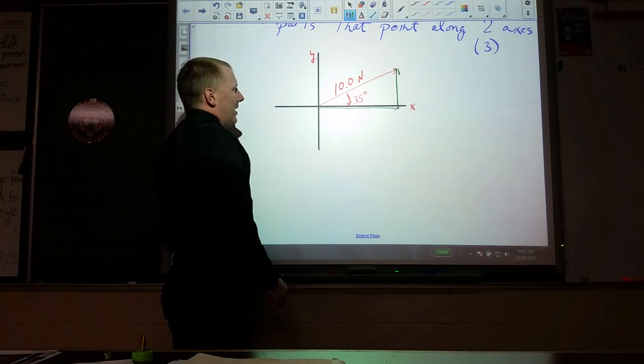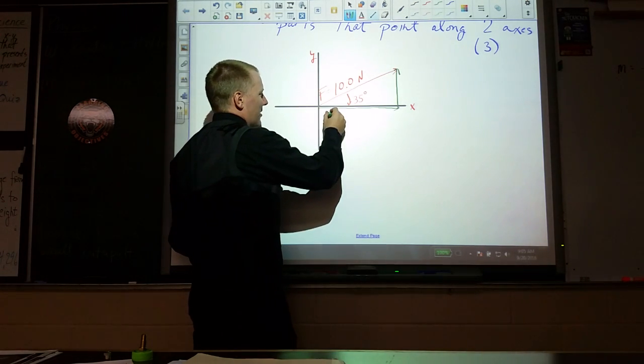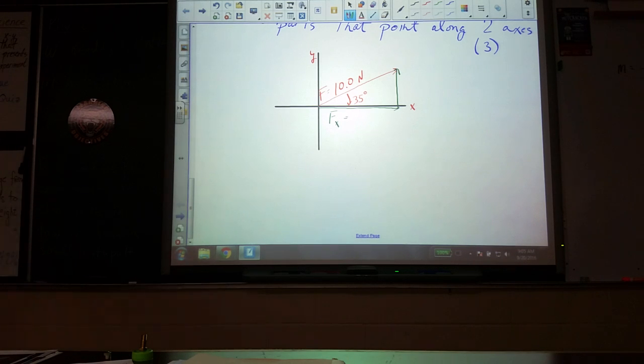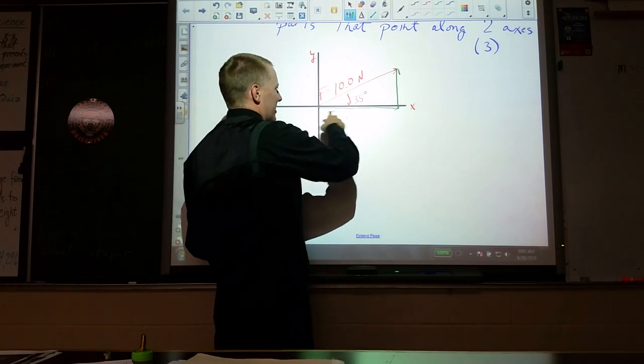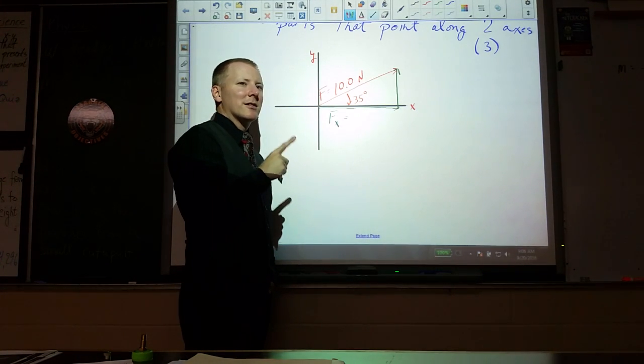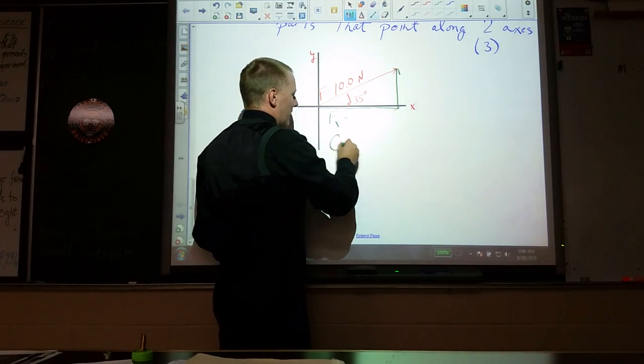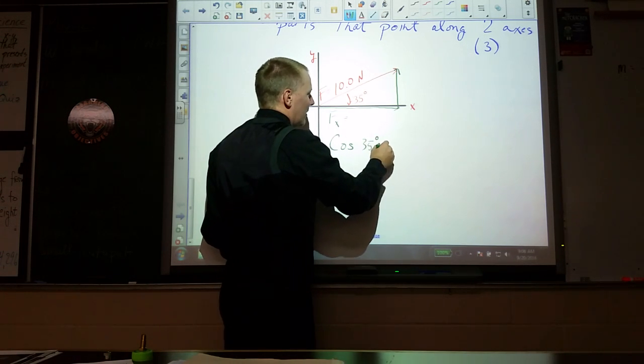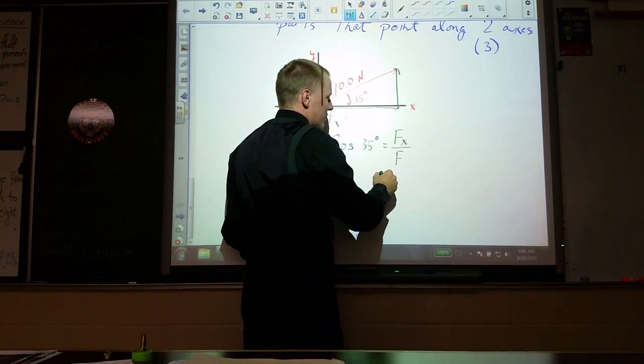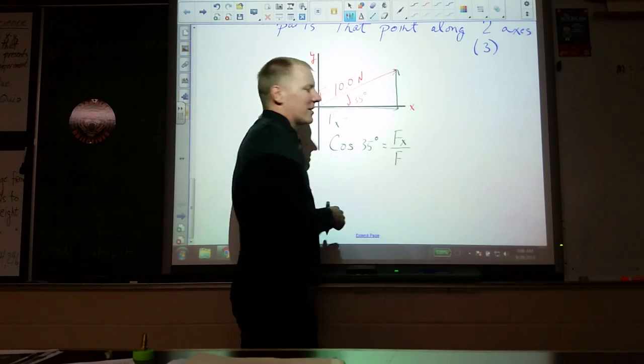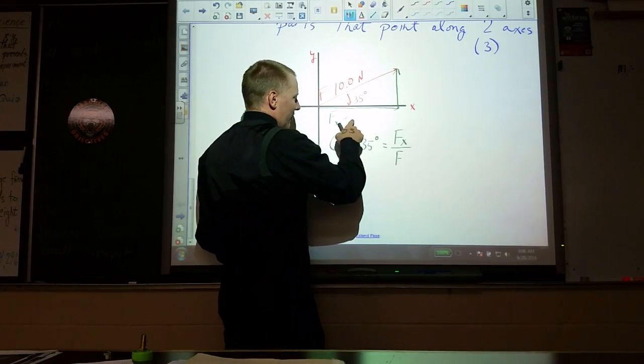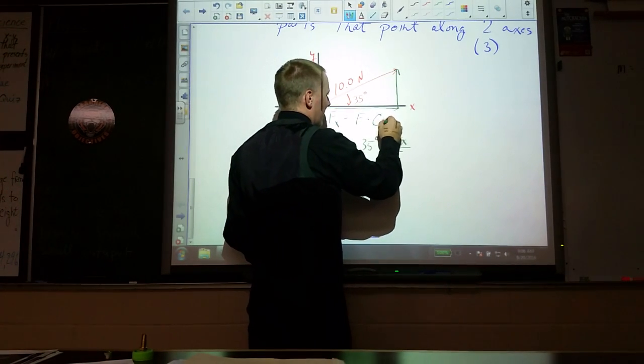If I want to know the x component - let's say this is my force - I call that F with a subscript x. That's a side of a triangle. Looking at this side compared to my angle, what would I call this side? The adjacent. What would I call this side? Hypotenuse. Which trig function relates adjacent and hypotenuse? Cosine. So cosine of 35 degrees equals the adjacent side Fx over the hypotenuse F. Multiply both sides, and Fx equals the original force, 10 newtons, times the cosine of that angle.